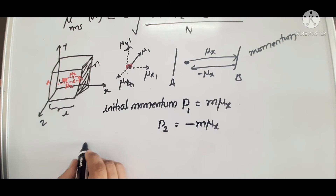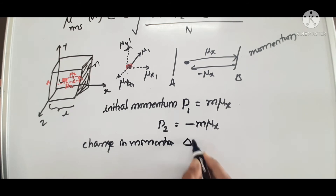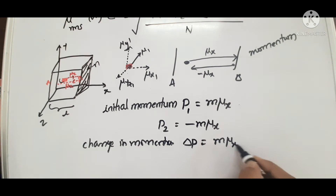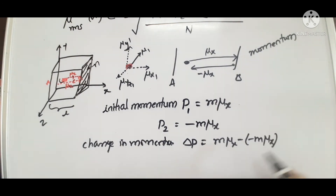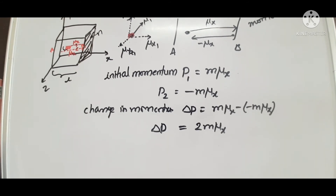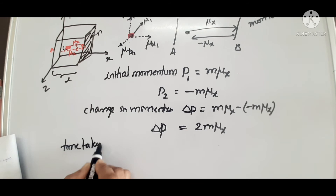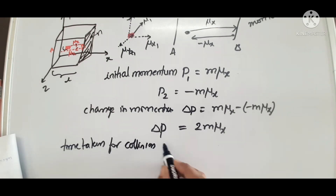First, one direction will be considered, then we will complete. The change in momentum delta P equals m minus minus 2 mu x. This is the delta P — change in momentum of the gas molecule when it collides the walls of the container, considering only one surface.